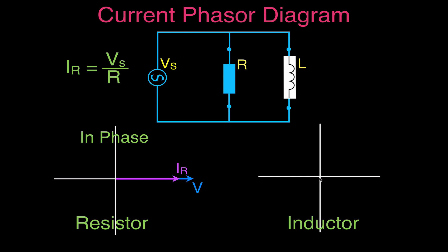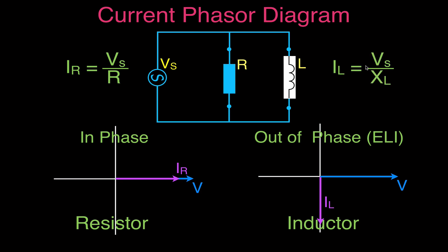In a purely inductive circuit we draw the voltage along the x-axis, but the voltage and current are out of phase. Using the ELI the ICE man mnemonic — L for inductor — the voltage leads the current by 90 degrees. The current through the inductor is typically drawn on the negative y-axis, and is calculated as the voltage of the source divided by the inductive reactance XL.